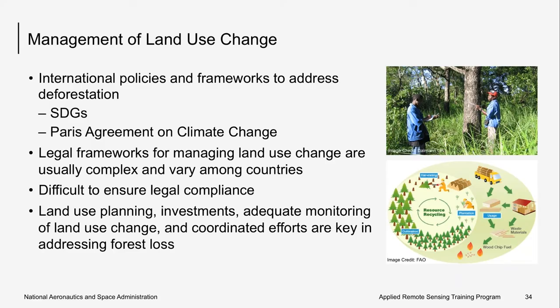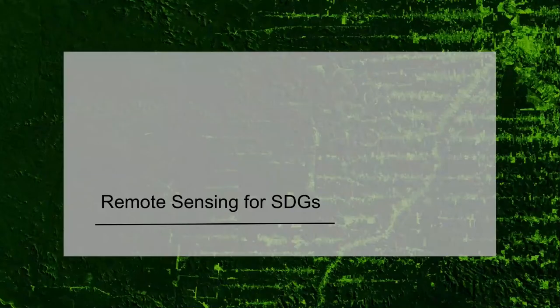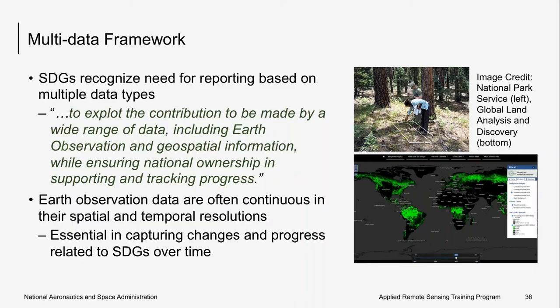The remainder of this webinar will focus on the technical aspects of using remote sensing for these goals. To track progress towards the goals and targets, the Global Indicator Framework must capture multi-faceted and ambitious aspirations for development. Effective reporting of progress requires the use of multiple data types — both what we have in hand, such as traditional national accounts, household surveys, and routine administrative data, as well as Earth observations. Within the SDGs, there's a clear statement to exploit the contribution of a wide range of data, including Earth observation and geospatial information, while ensuring national ownership in supporting and tracking progress.